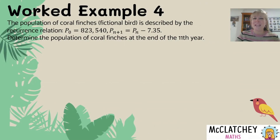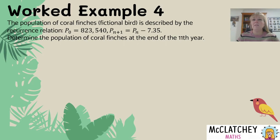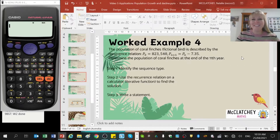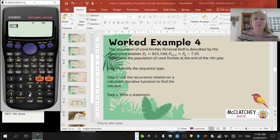Our last example today looks at the population of coral finches — another fictional bird — described by a recurrence relation. P0 equals 823,540; Pn+1 equals Pn minus 7.35. We need to determine the population at the end of the 11th year. We're given the starting amount and told the common difference is minus 7.35. We could translate that into a general rule, but in this case I'm going to show how to do this on the calculator using the iterative function. Enter 823,540 for P0, press equals to drop it down, then subtract 7.35.